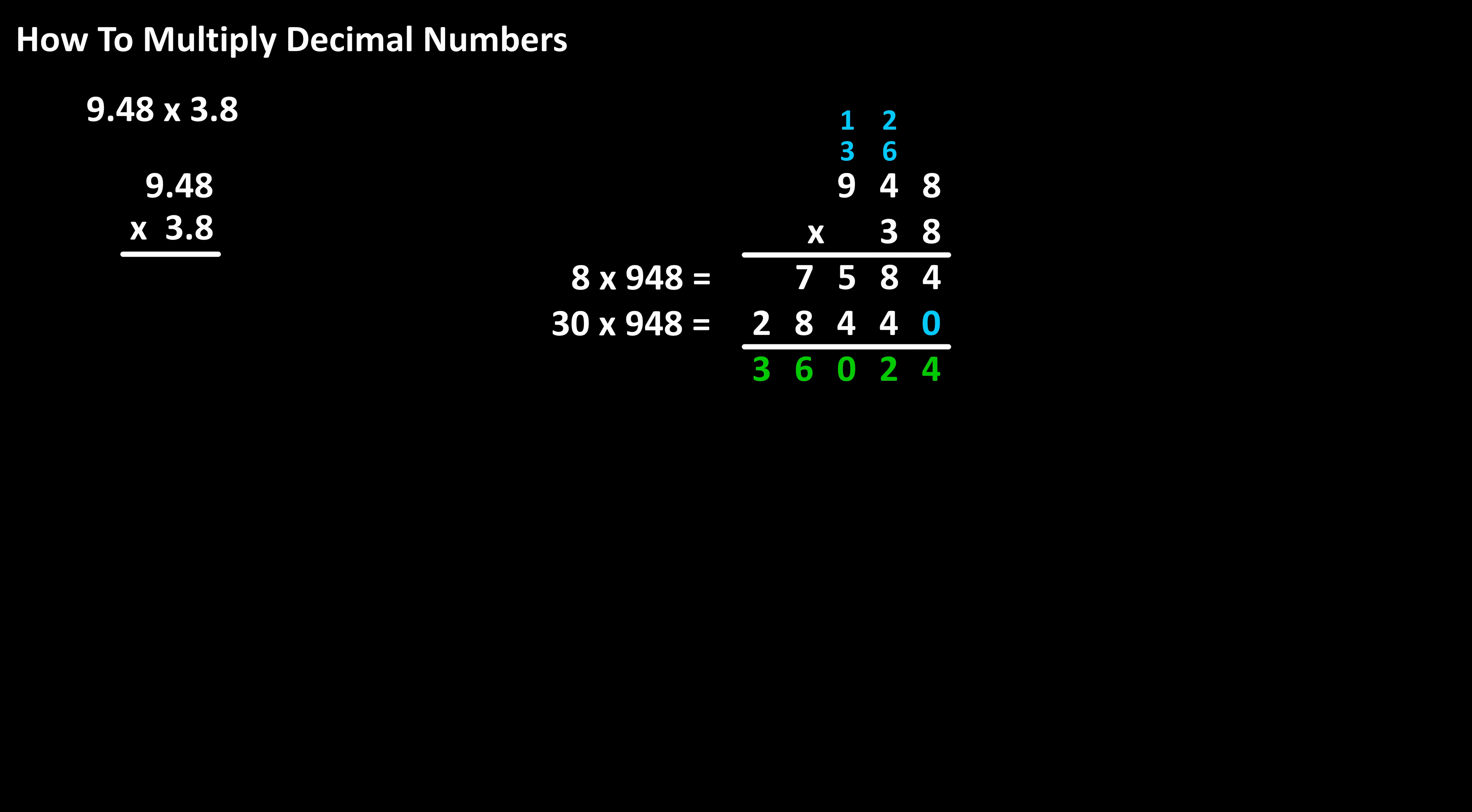For now, we're going to ignore the decimal points and do the multiplication, which I've completed on the screen. For the positioning of the decimal point in the answer, we do three steps.